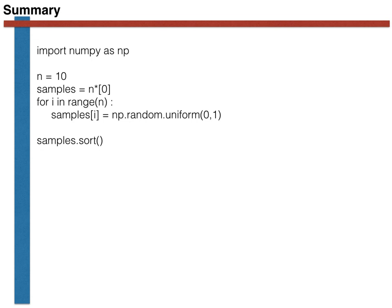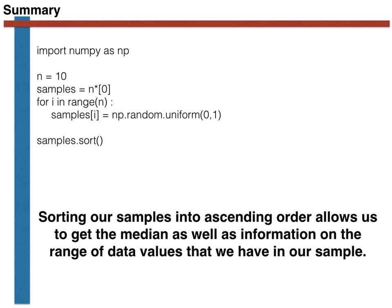To summarise, then, I have shown you how you can generate a list of random variables, and how you can then sort this list into ascending order using a code like the one shown on this slide. Furthermore, I have explained that this procedure is useful when it comes to calculating the median of the distribution, as well as information on the range of the data values within the sample. In the next exercise, you will have to use these ideas to calculate the median and some percentiles for a distribution. Good luck!